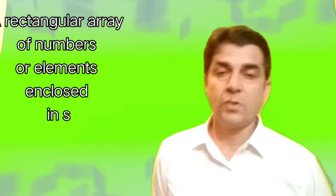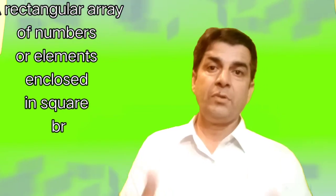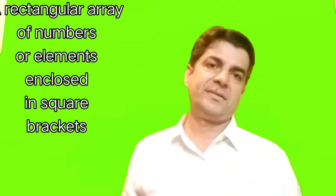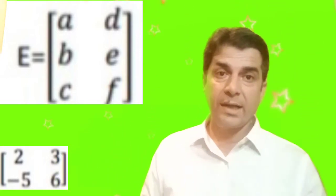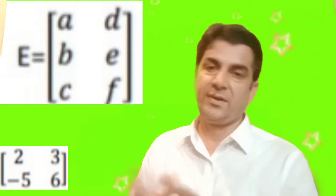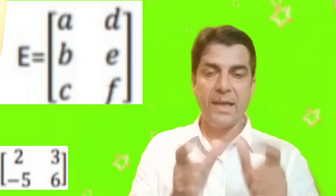Yes, the definition of matrix is so simple. A rectangular array of numbers or elements enclosed in square brackets. Remember that in the definition, the word rectangular array is used. And we know that is not only a rectangular array, that is also a square array. But we know that a rectangle can also be called a square. That is why in the definition, the word rectangular is used.